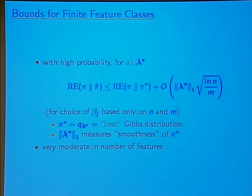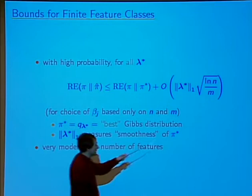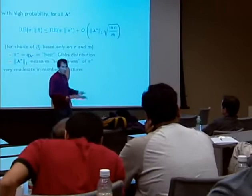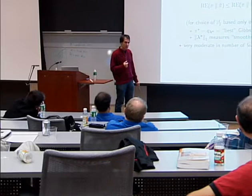We have relatively few samples and can't afford much, but fortunately the dependence is only logarithmic in the number of features. With 100 samples, according to this bound, it might still not be enough — but at least qualitatively, we expect that the number of examples needed should depend on log of the number of features rather than linear in the number of features.